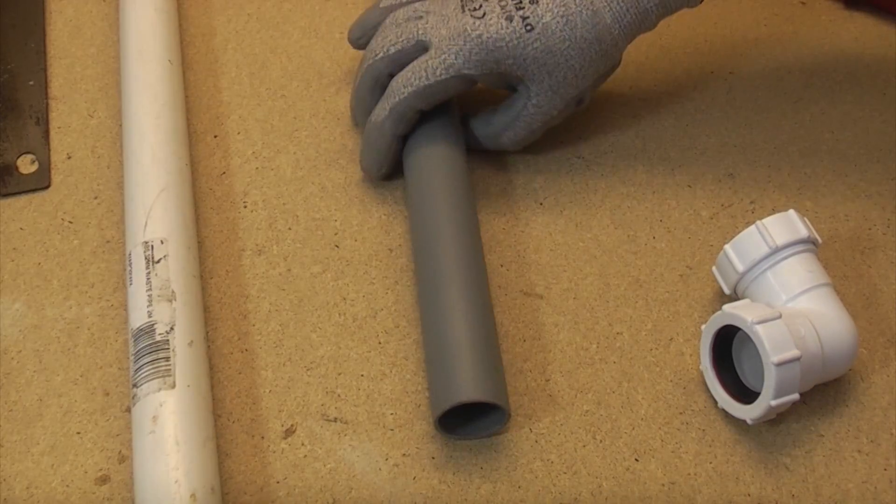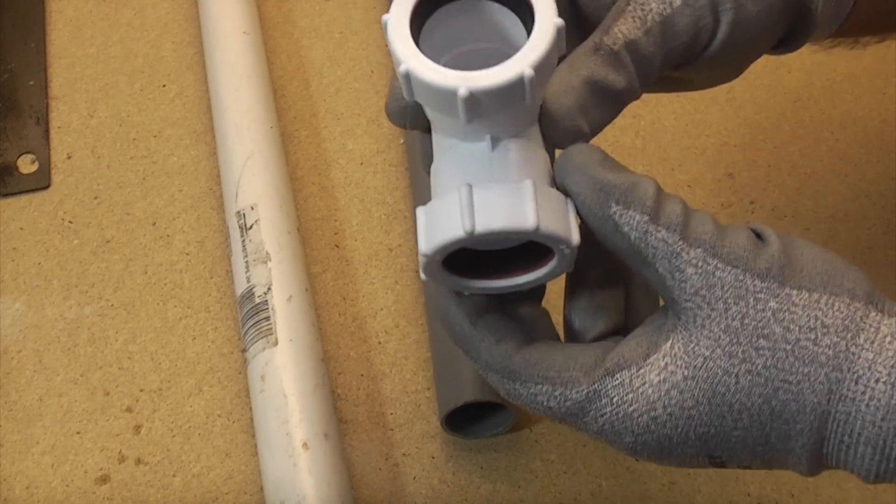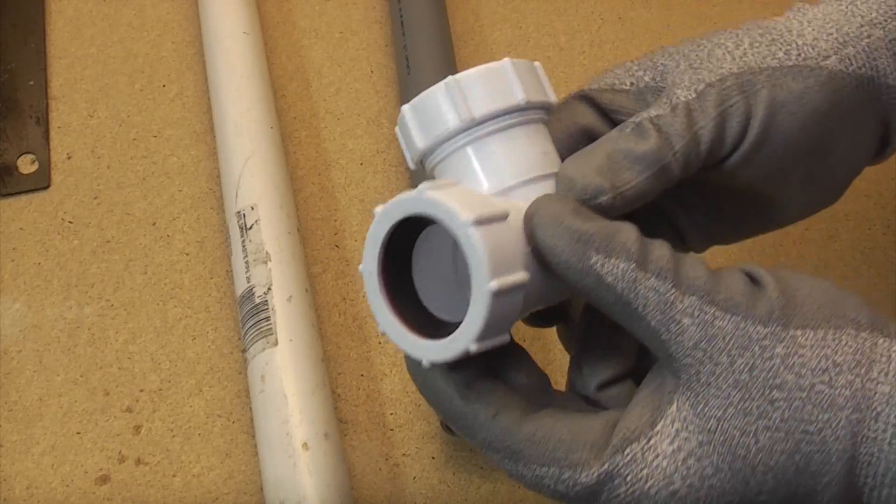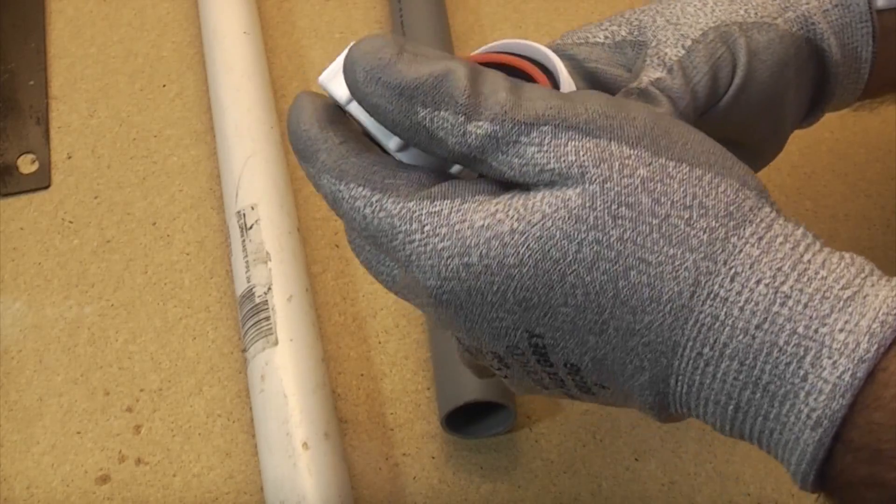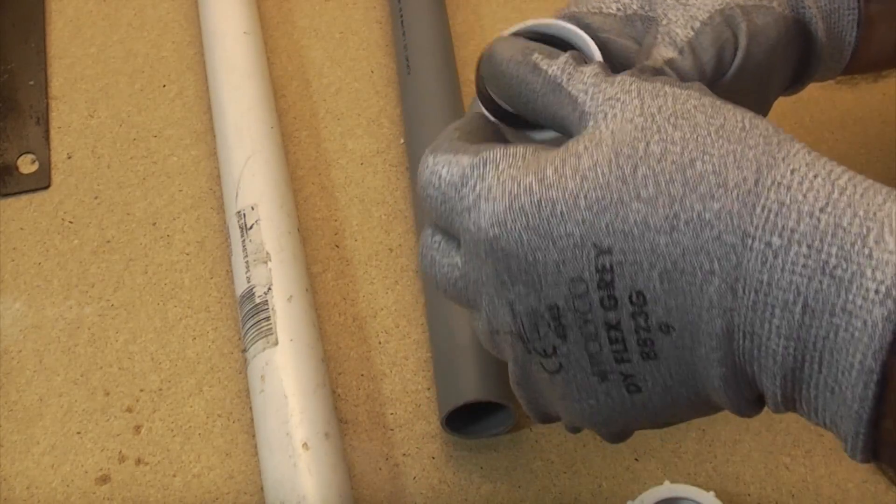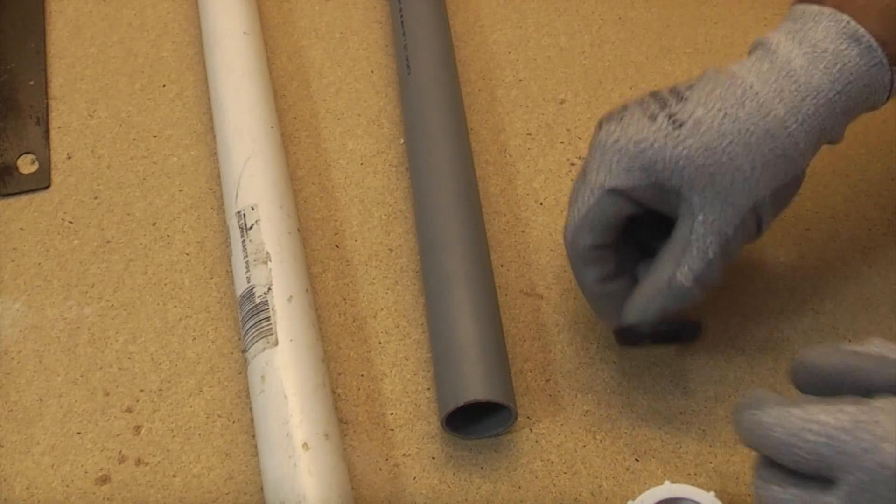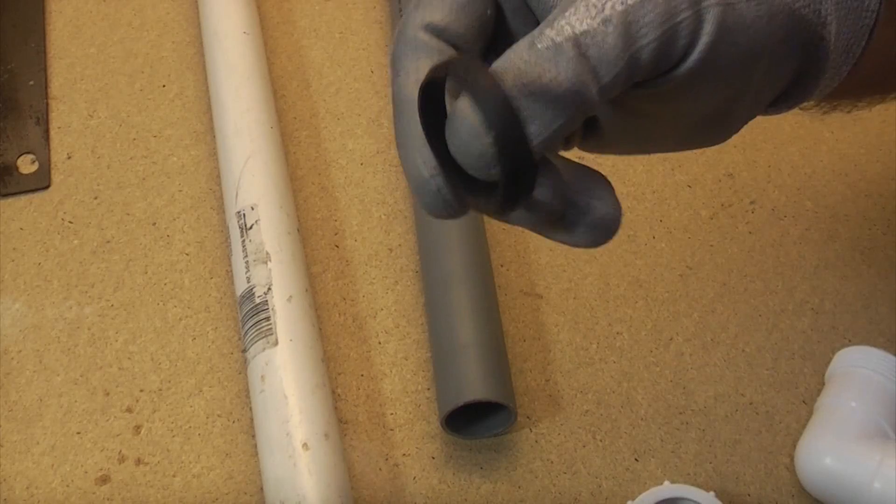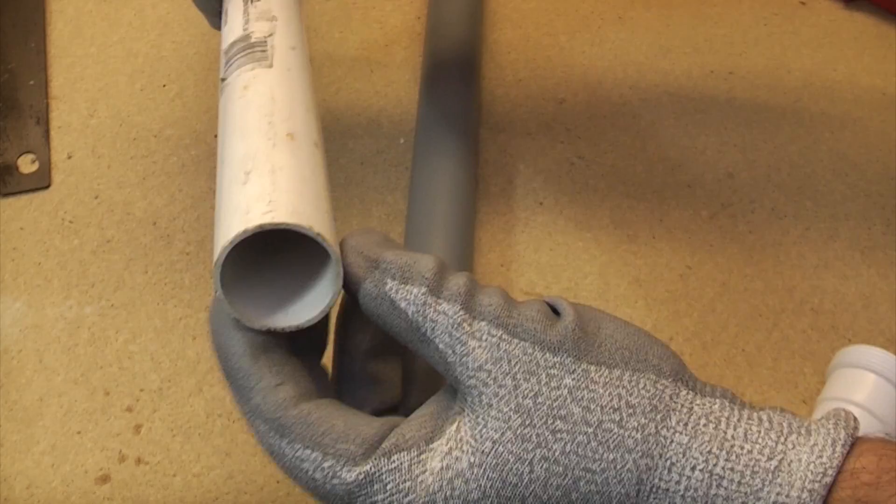So to connect a push fit to a solvent weld you need a compression fitting. And this is a unifit compression. So if we remove that nut you'll see that there's a washer and then a tapered washer and then the fitting itself. And that washer will fit on either the 32mm push fit or the 32mm solvent weld.